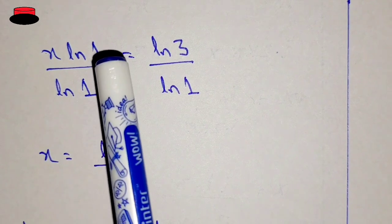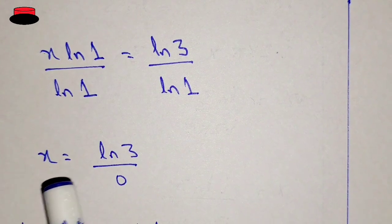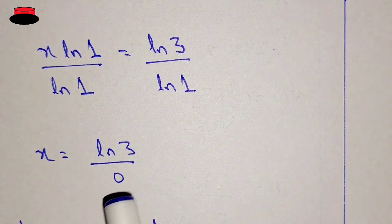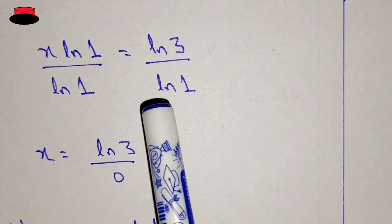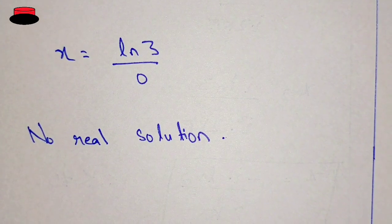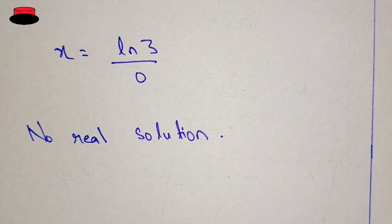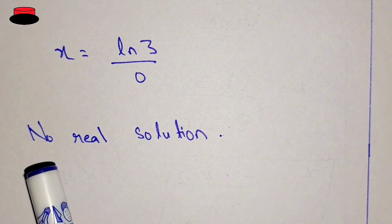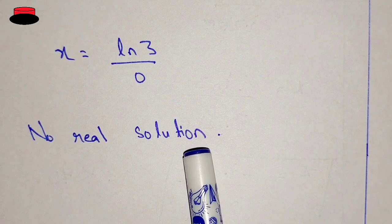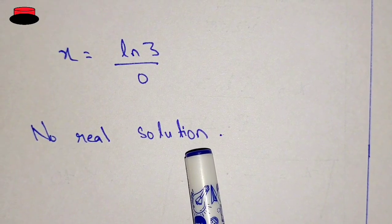ln(1) will be cancelled, so we get x equal to ln(3) divided by 0. Since we know that ln(1) is equal to 0, anything divided by 0 is undefined, so we can say there is no real solution. But there may be a complex solution — for that we will use Euler's formula to check whether a complex solution exists or not.